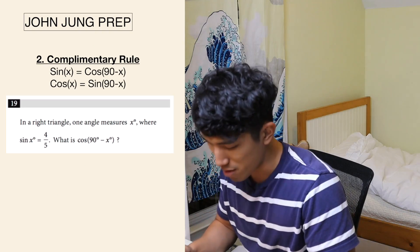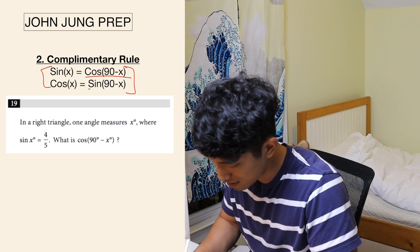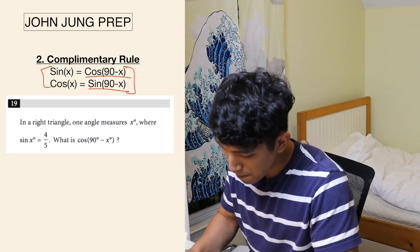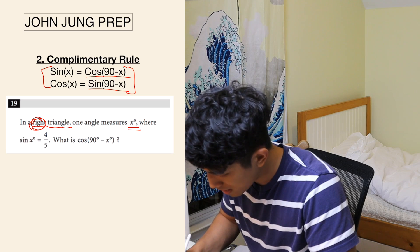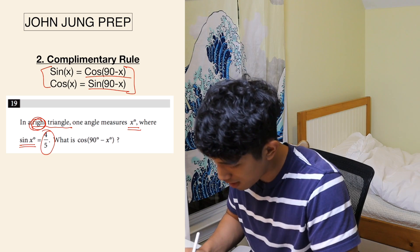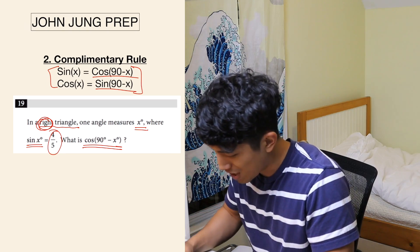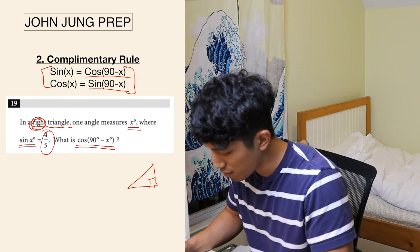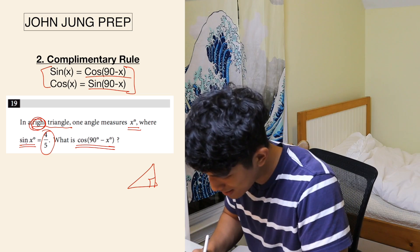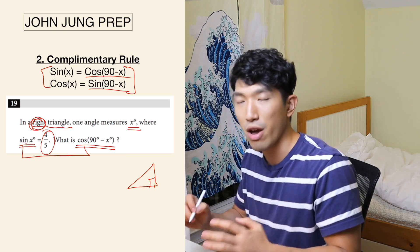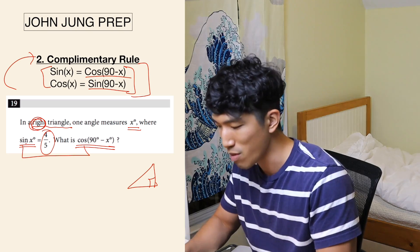The second question is about complementary rule — a trig identity where sine of x equals cosine of (90 minus x), and cosine of x equals sine of (90 minus x). The question says: in a right triangle, one angle measures x where sine of x is 4/5. What is cosine of (90 minus x)? Whenever you see cosine and sine within the same question, there's a very big chance it's about the complementary rule, so try that first.